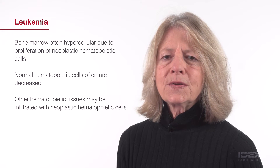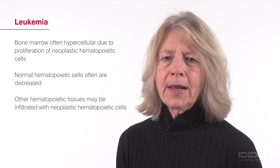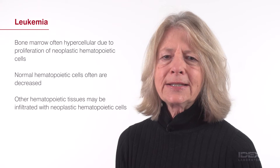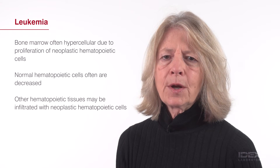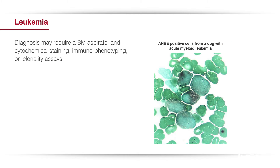The diagnosis initially is based on results of a complete blood count, or CBC, and examination of cell morphology. However, morphologic evaluation of neoplastic hematopoietic cells has limitations. Cytochemical staining, as shown in this dog with acute myeloid leukemia, may be helpful for classification, but it is not widely available.